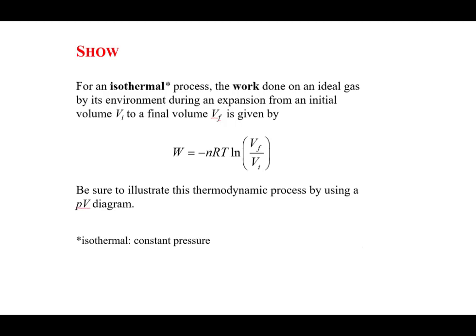For an isothermal process, the work done on an ideal gas by its environment during an expansion from an initial volume to a final volume is given by: work equals minus the number of moles of the ideal gas times the gas constant times the temperature of the gas times the natural log of the ratio of the gas's final volume to its initial volume.